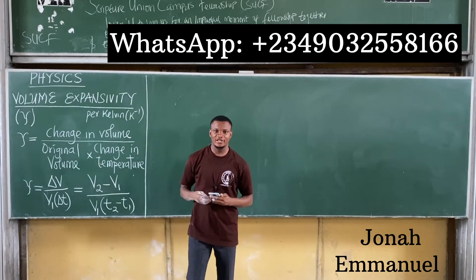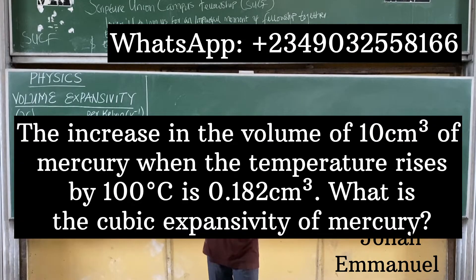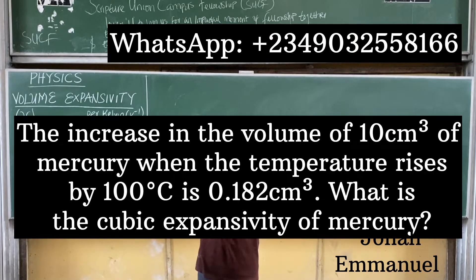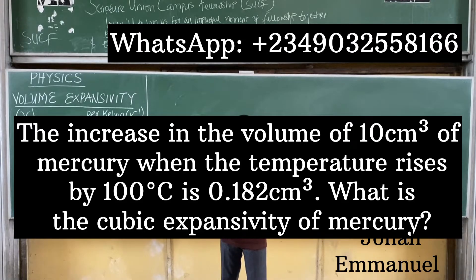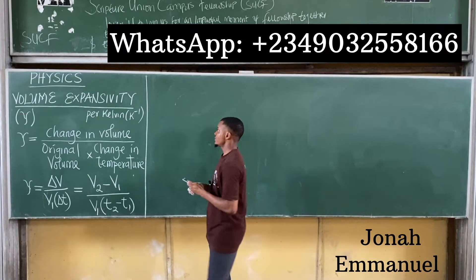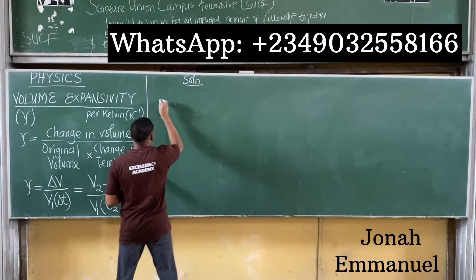Let's look at this question. The question says: the increase in the volume of a 10 cm³ cube of mercury when the temperature rises by 100 degrees Celsius is 0.182 cm³. What is the cubic expansivity of mercury?